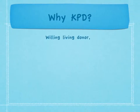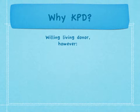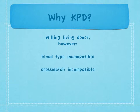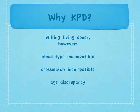An important concept to understand is why kidney paired donation is necessary. Approximately one-third of patients who need a kidney transplant and come forward with a potential living donor have incompatibility with that donor. This incompatibility may be due to blood type incompatibility or cross-match incompatibility. In other cases, there may be a wide age discrepancy between the potential donor and recipient, and they may choose to participate in kidney paired donation to find closer age matches. Other times, a recipient and donor may be seeking a better genetic match for the recipient.